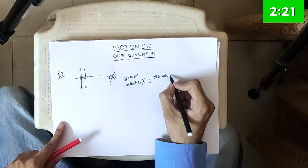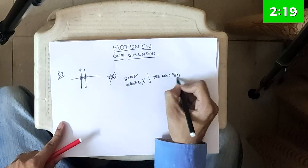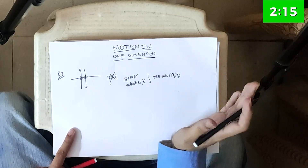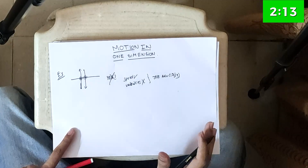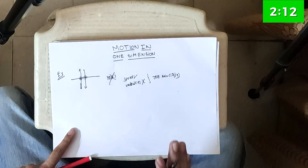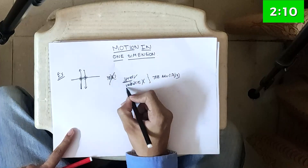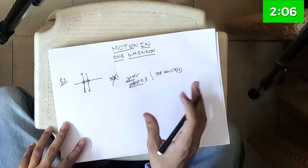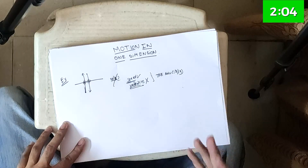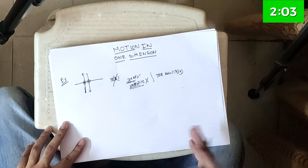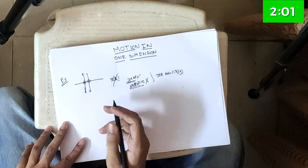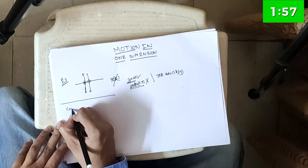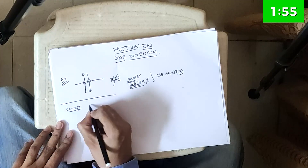This question appeared in JEE Advanced in 2018 or 2019, and many students got it wrong — even coaching institutes gave the wrong answer. That is the importance of understanding speed and velocity. In physics they are distinct, but in chemistry speeds and velocities are often used interchangeably, so please be careful.